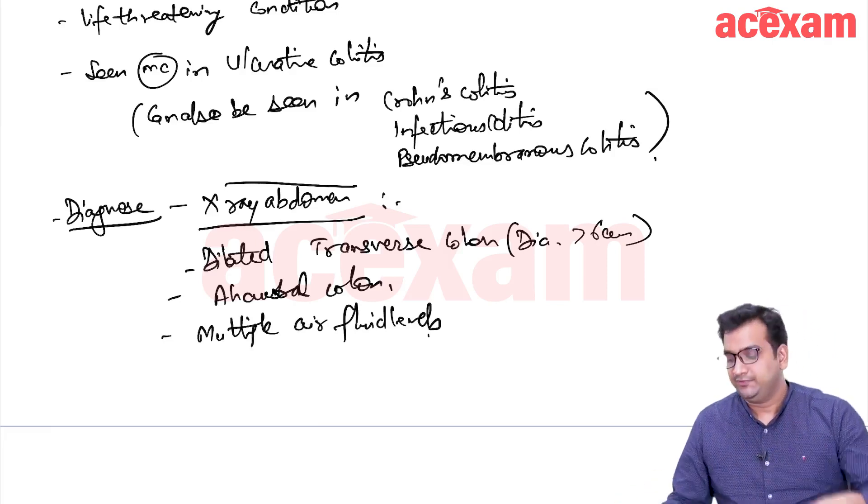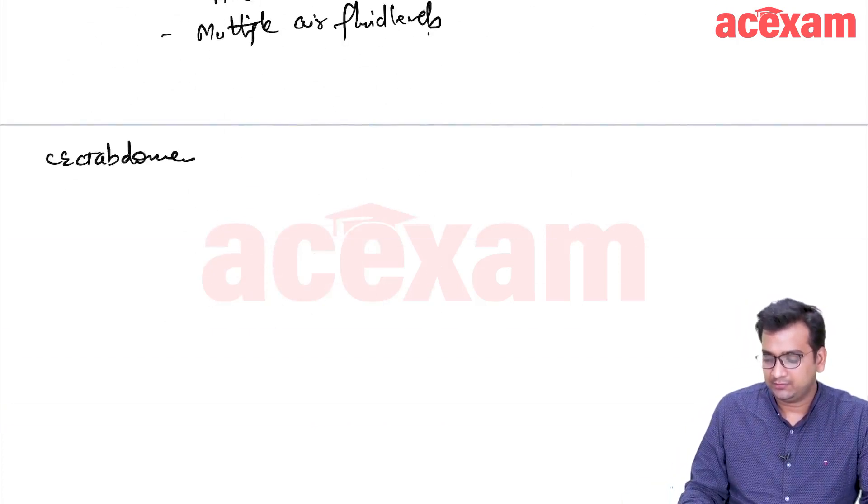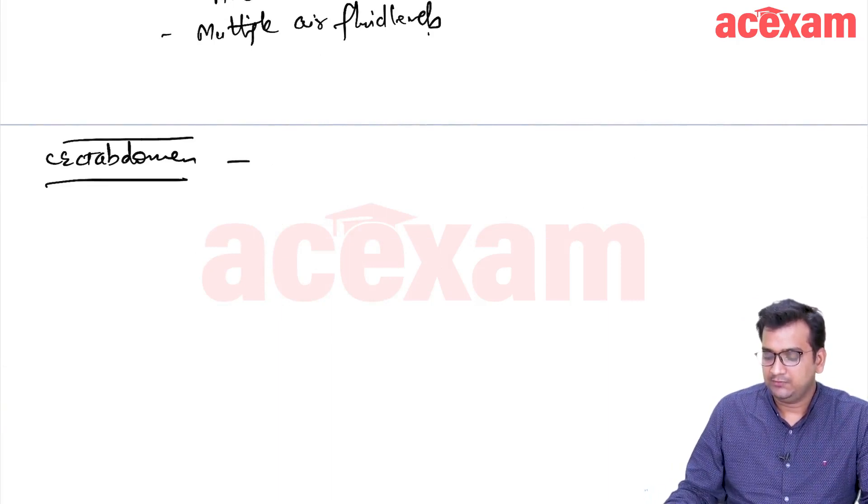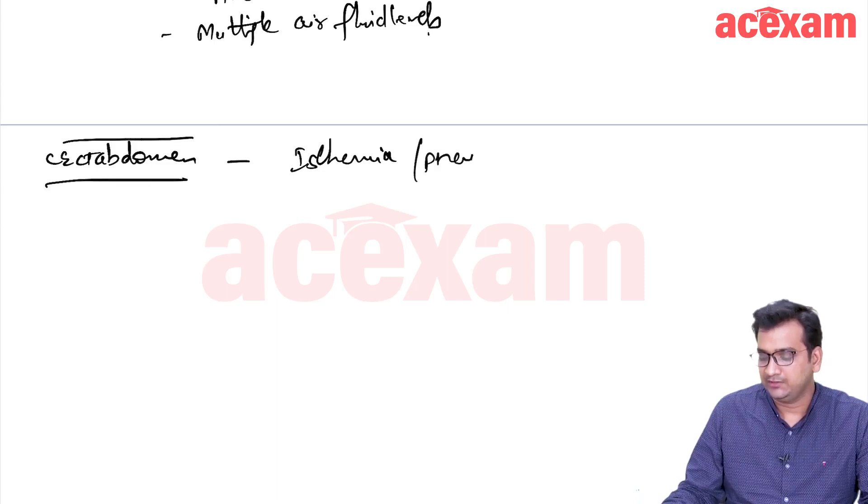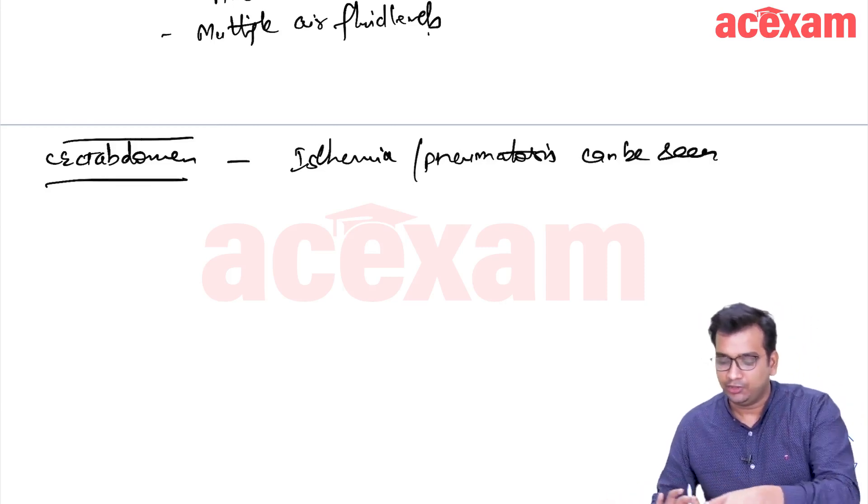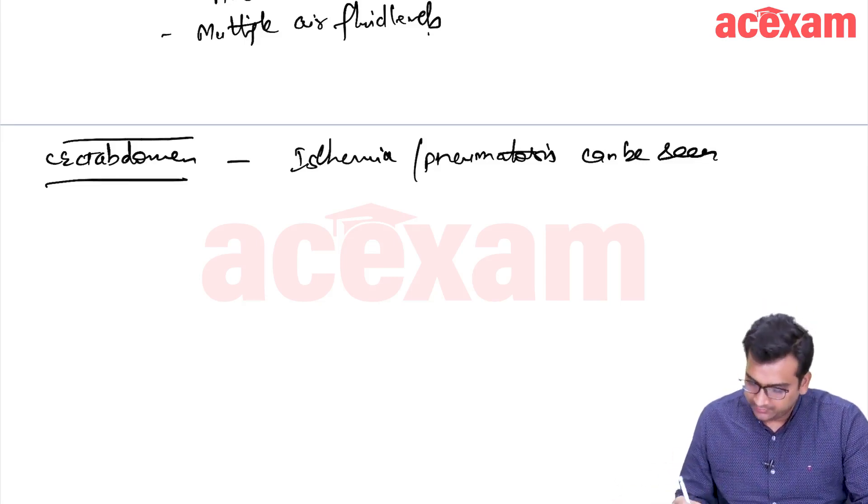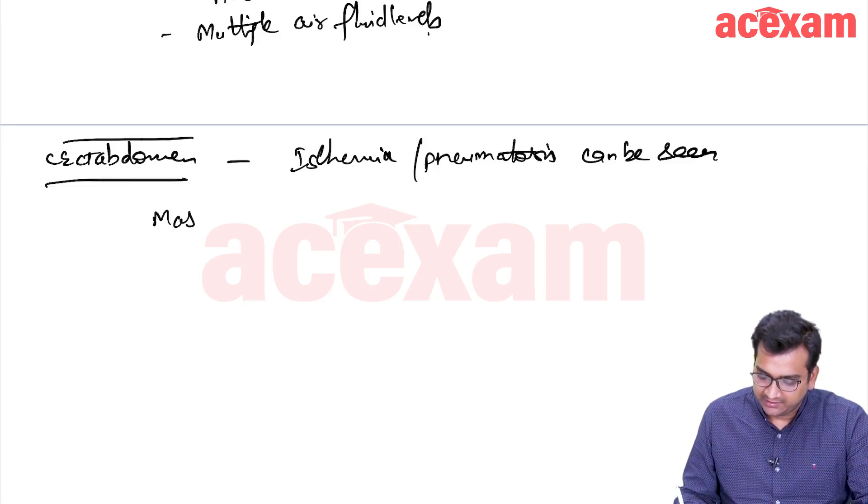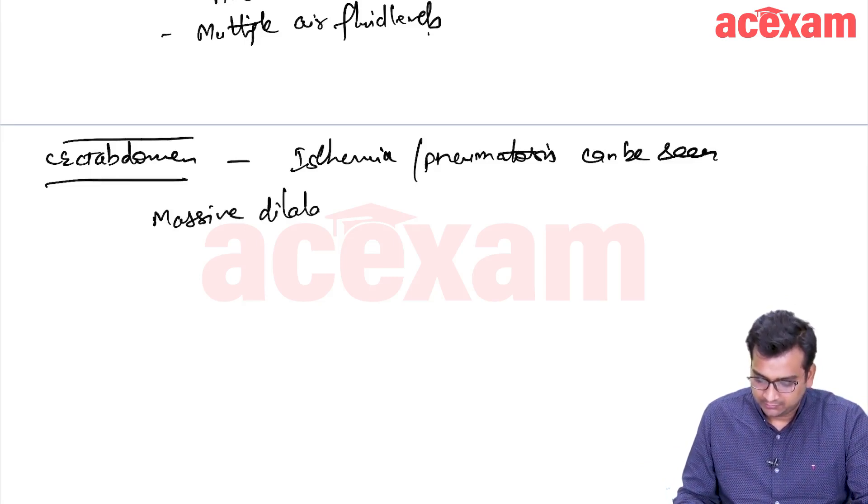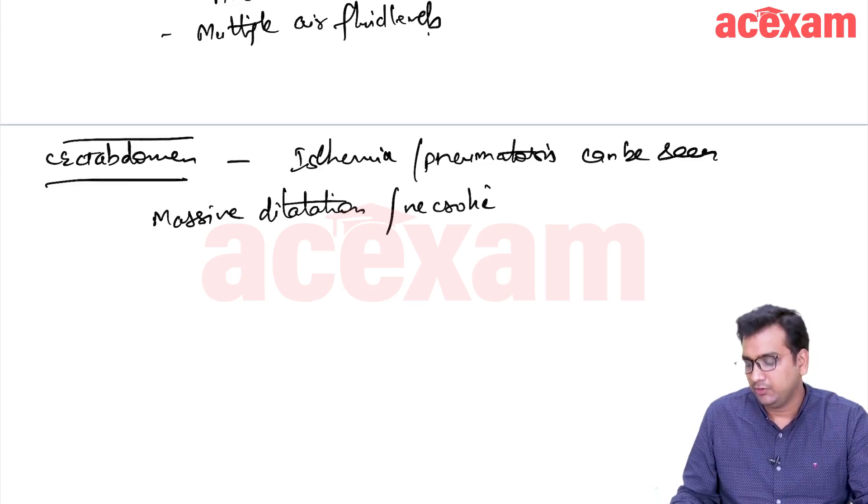And in case if we are getting a CT done, CT abdomen, then we can also see ischemic colon. Ischemia or pneumatosis can be seen on CT or it can be seen on x-ray also. And there is massive dilatation or a necrotic thin-walled colon.